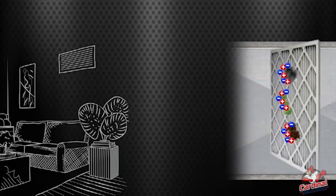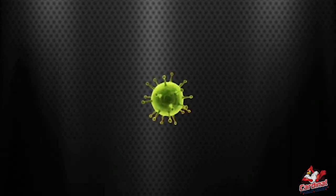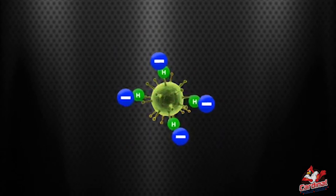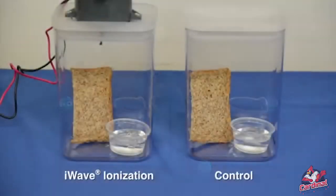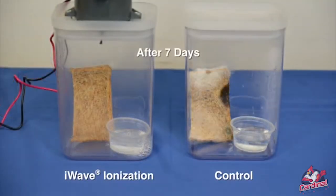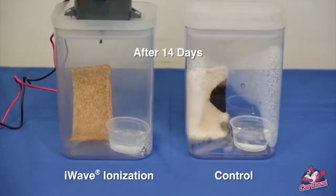When the ions come in contact with viruses, bacteria, or mold, they remove the hydrogen atom from the pathogens. Without hydrogen, the pathogens have no source of energy and will die. A simple demonstration shows how iWave prevents mold from growing on bread over time. This shows how iWave kills pathogens downstream of the device at the coil and in the living space.